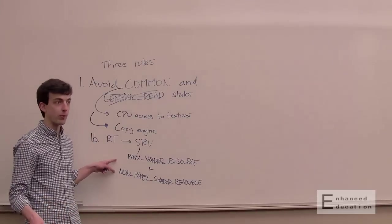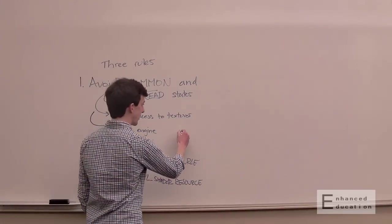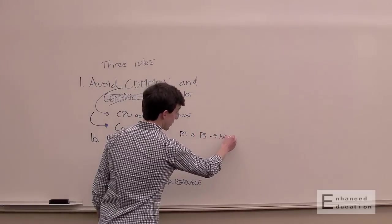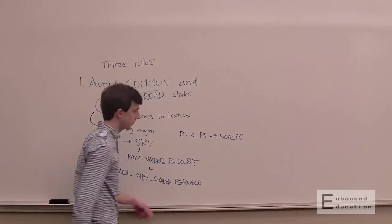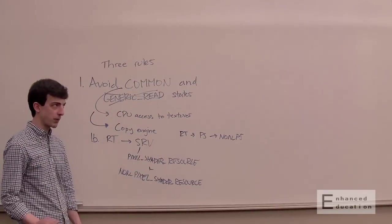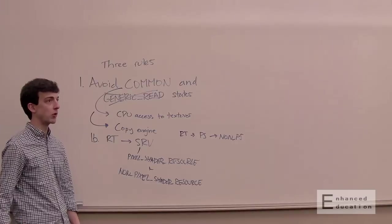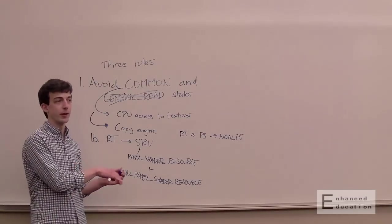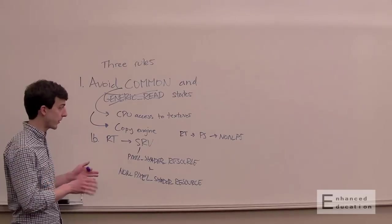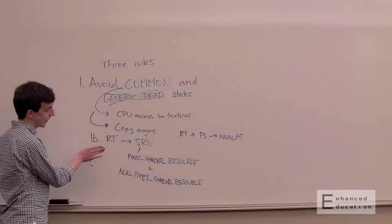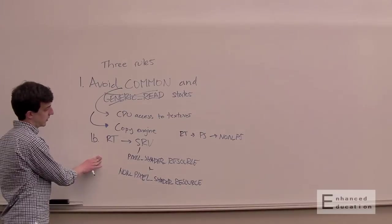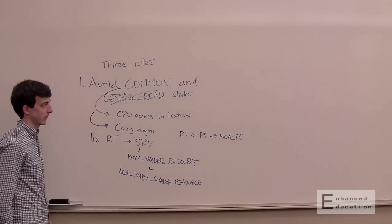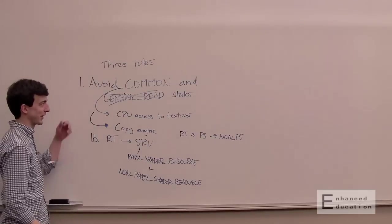Now if you're going to be using it as an SRV first as in a pixel shader and then in a compute shader, you should go to both. You don't want to do like RT to PS and then to non-PS if you could have just done these in one step up front. But that's probably not going to happen most of the time. Most of the time you're only going to be using a buffer in a compute shader or you're only going to be consuming a render target probably in a pixel shader. So be very careful about that. Always choose the most constrained set of states.